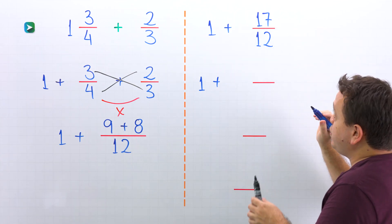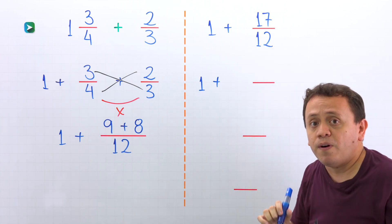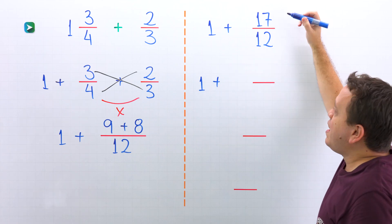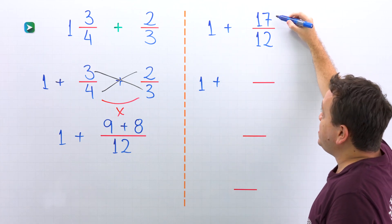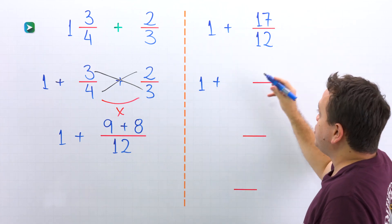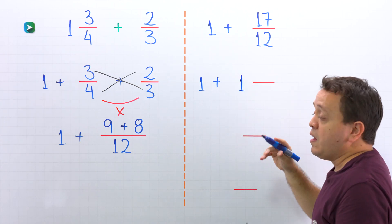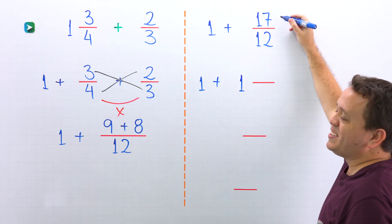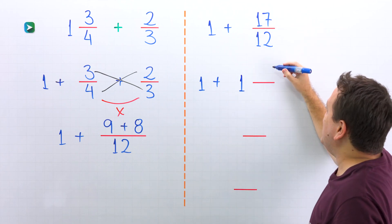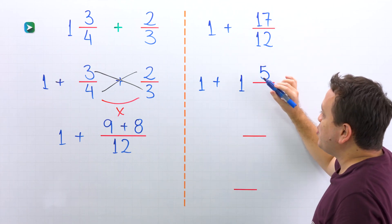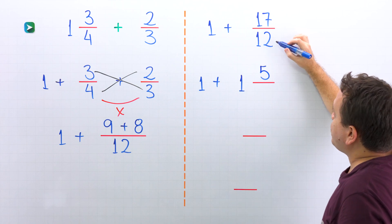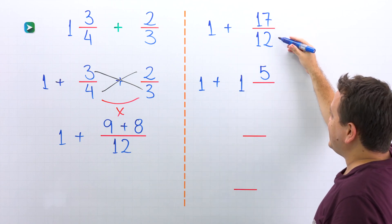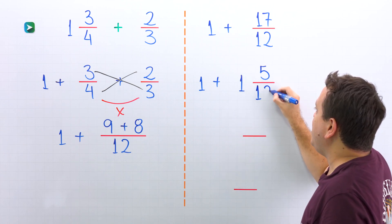So we are going to rewrite this fraction as a division. How many times does 12 go into 17? Well, 12 goes into 17 one time. Then we multiply: 1 times 12 is 12. To get 17, we need to add 5. The denominator stays the same: 12.